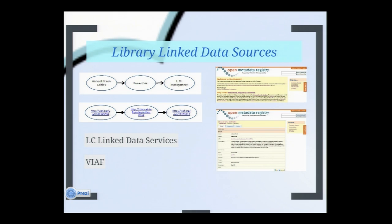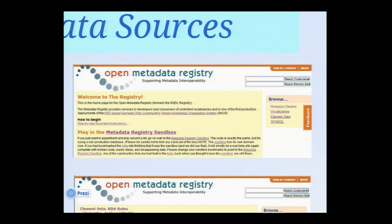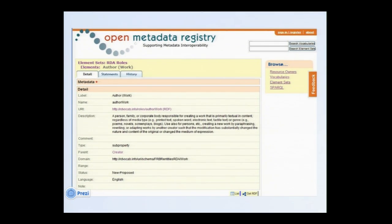We want to take 'Anne of Green Gables has author L.M. Montgomery' and replace those with HTTP URIs. There are plenty of resources for subjects and objects — LC Linked Data Services, VIAF — but what about the predicates, the middle part? Enter the Open Metadata Registry. The metadata registry hosts over 300 vocabularies, including 116 for MARC 21 format and 70 RDA-based vocabularies, as well as several element sets containing thousands of elements for both MARC and RDA. These are already established — they have the URIs. They're just waiting to be used.